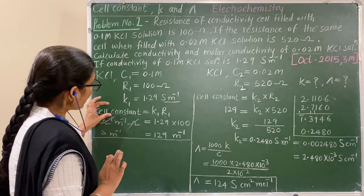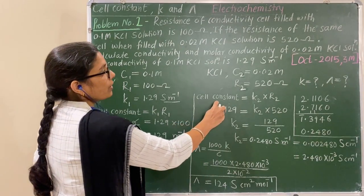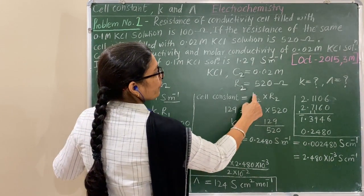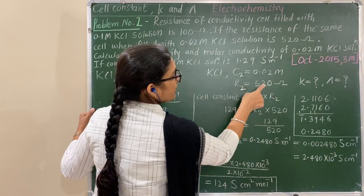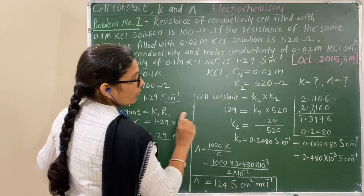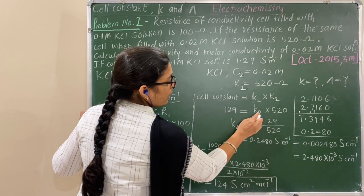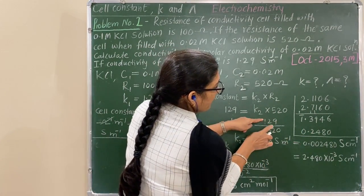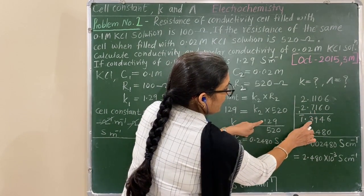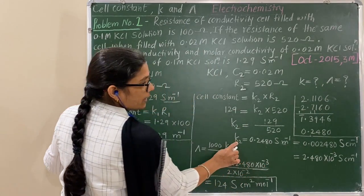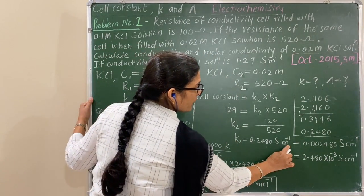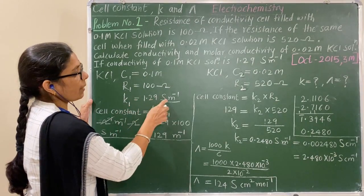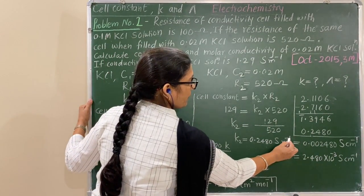Now use this cell constant for the second solution. Cell constant is 129 per meter. Conductivity is what we want to determine; resistance is given. Conductivity equals cell constant divided by resistance. Using logarithms: take logs, subtract, take antilog — the conductivity of the 0.02 molar KCL solution is obtained in Siemens per meter.